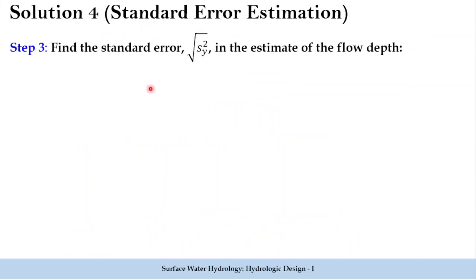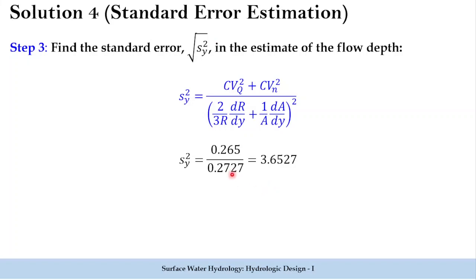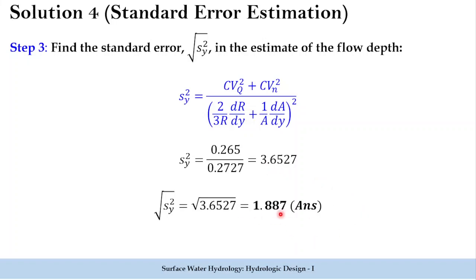Since we will be getting sy² in step two, to find the standard error we take the square root. Substituting numerator and denominator, we obtain sy² as 3.6527, and the square root yields a standard error of 1.887, which is the final result. This is the standard error for the case with the given coefficients of variation for flow depth and other details.